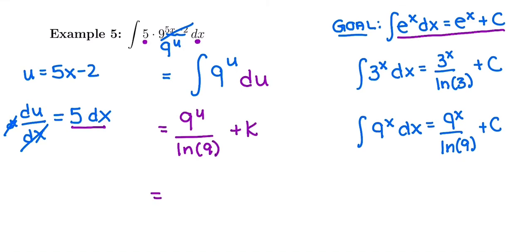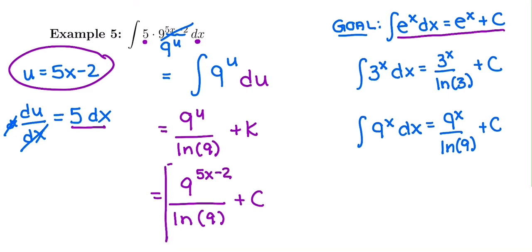And then our last step is going to be switching back to x's. I'm going to write 9 to the u over ln of 9 plus c and just replace that u that was the exponent with what it is in terms of x. So it's going to be 9 to the 5x minus 2 over ln of 9 plus c as our antiderivative.